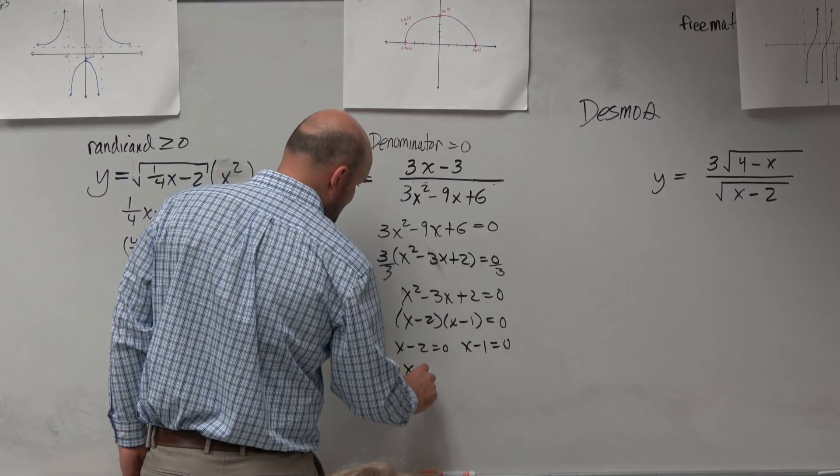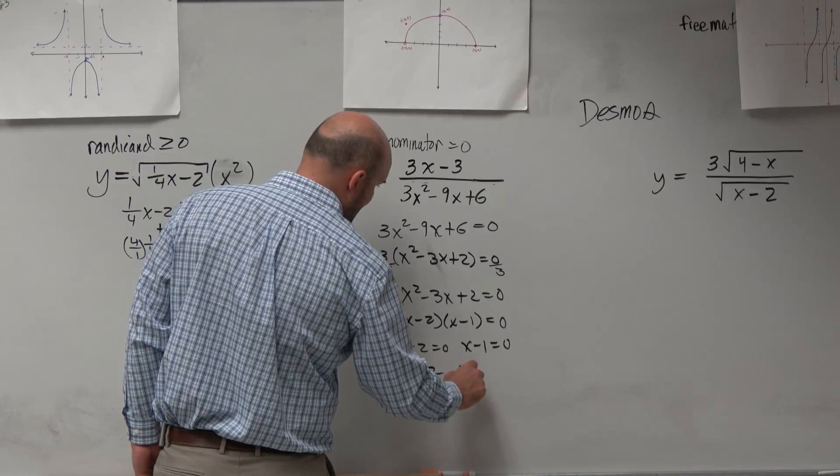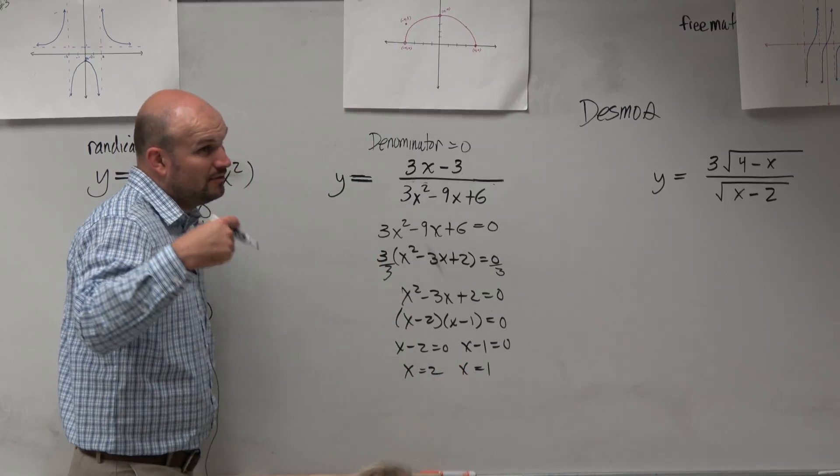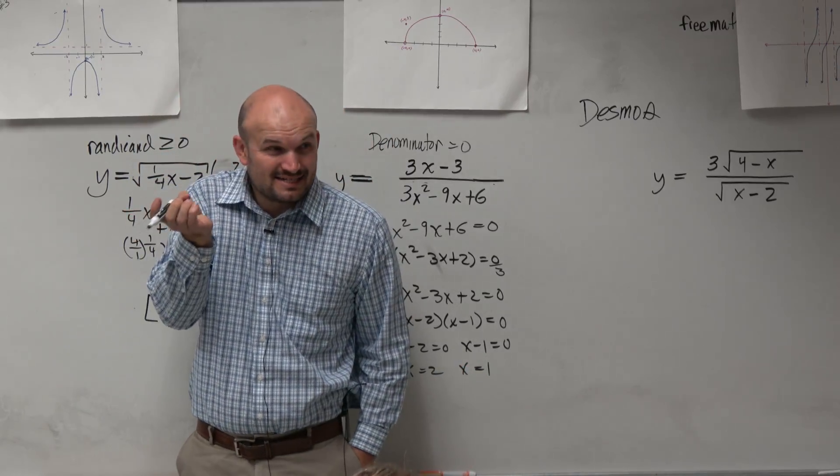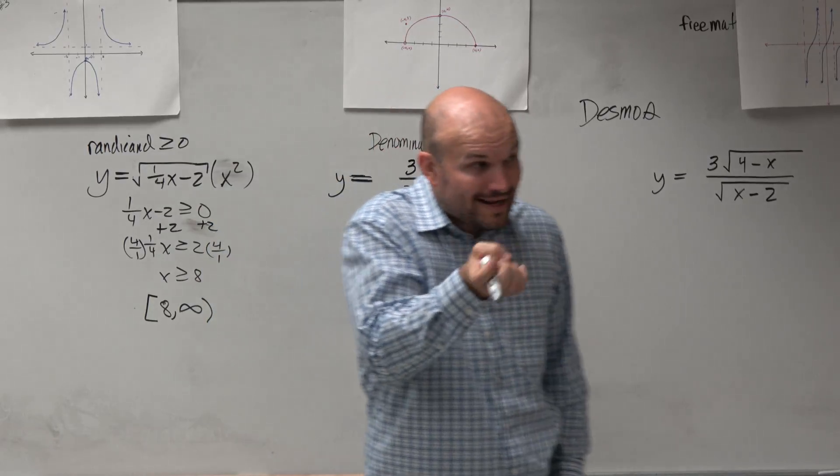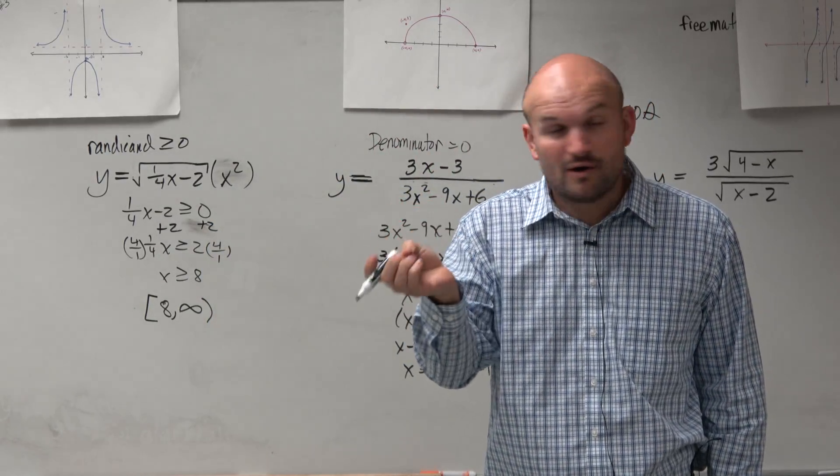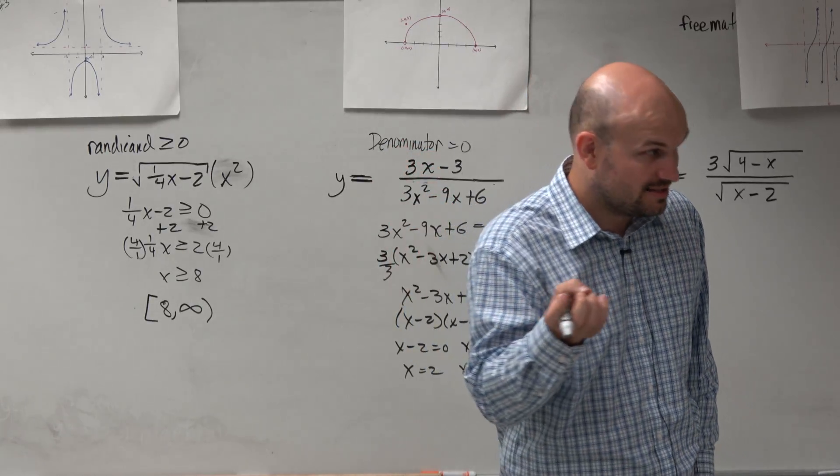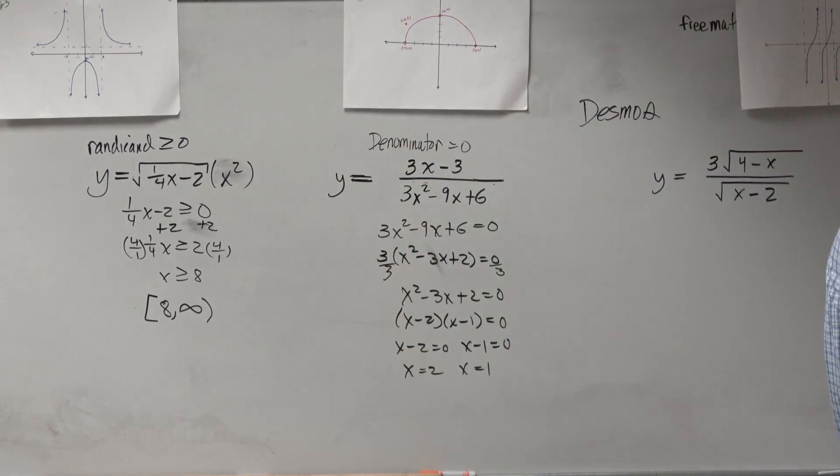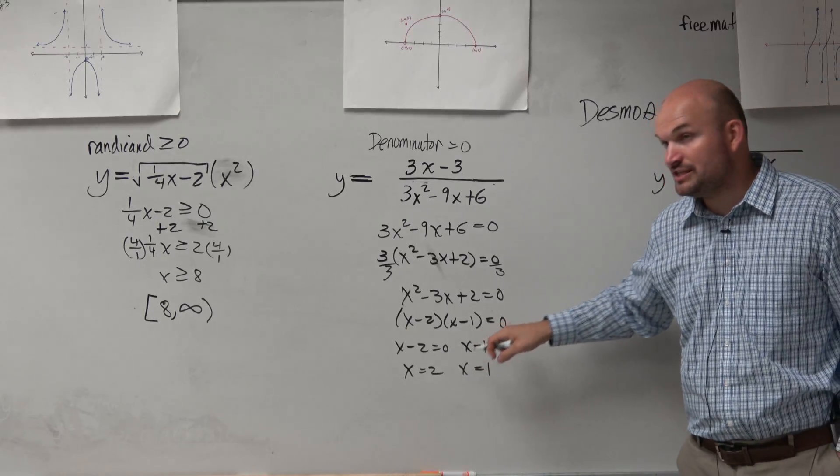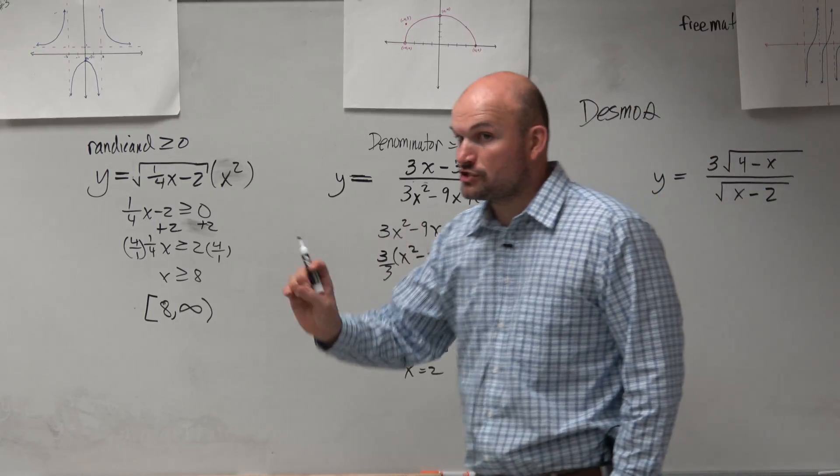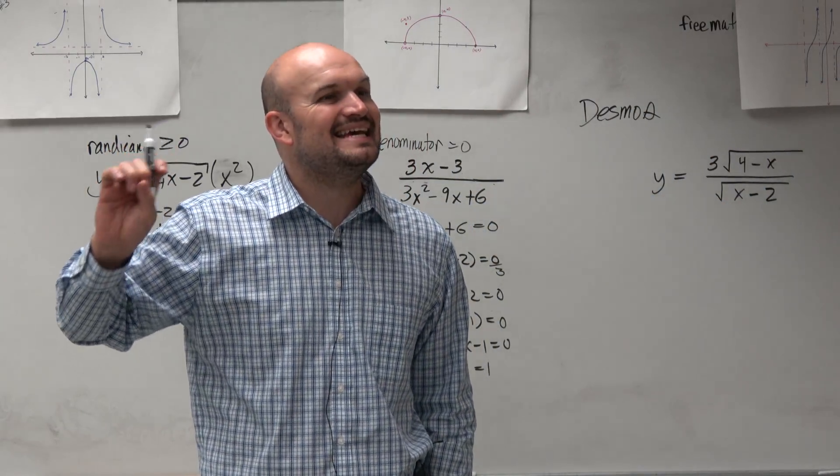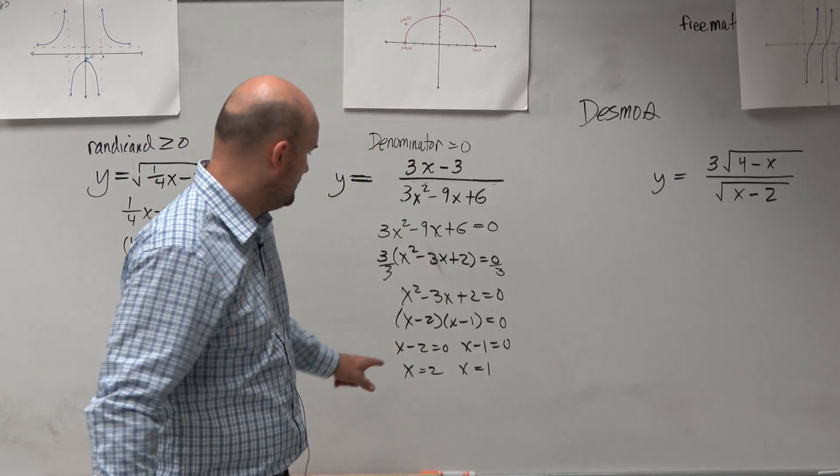So therefore, x equals 2 and x equals 1. Now again, we've got to understand, what does it mean when x equals 2 and when x equals 1? What it means is that the function is going to be 0 in the denominator. Therefore, the function is undefined. Right? So at those values, our function is defined. That means our function is true for all real numbers except 2 and 1.